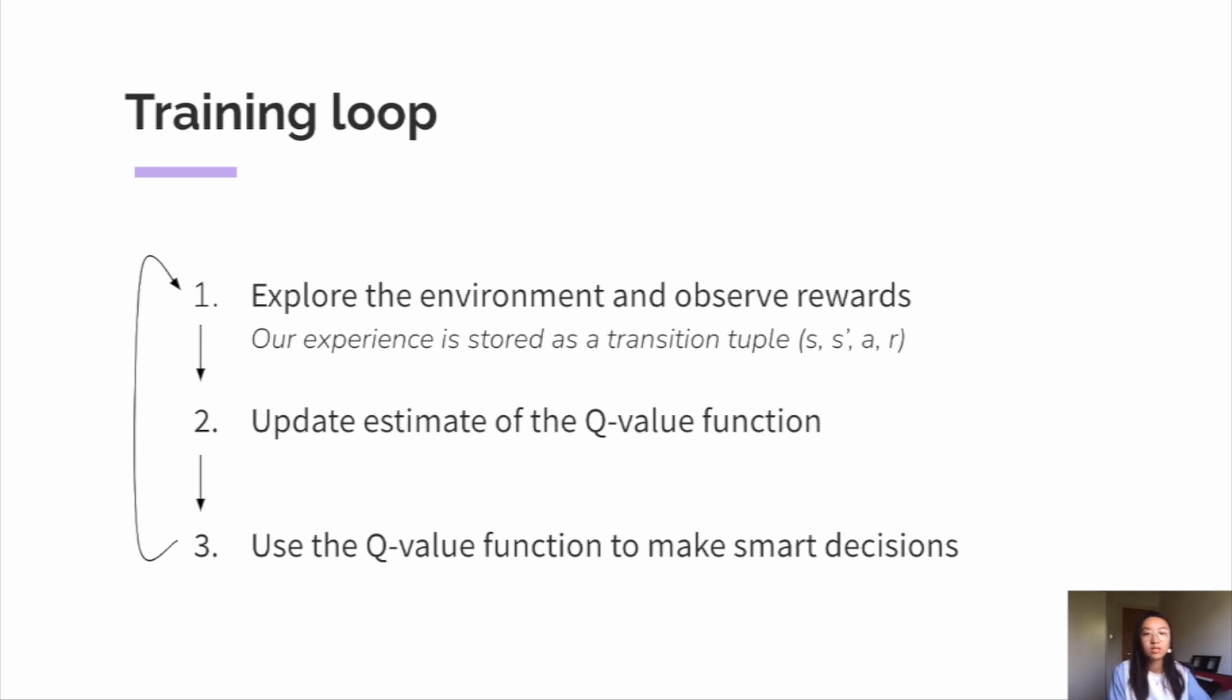And there are various ways we can update our estimate of the Q-value function. If we have discrete state and actions, there are iterative tabular methods which help us do this. However, many larger problems have a continuous state space.